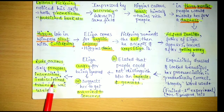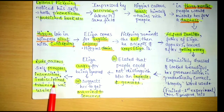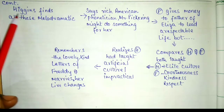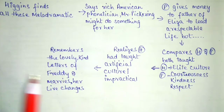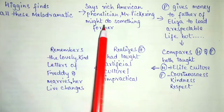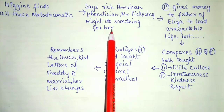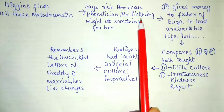Higgins was undisciplined — the person who instilled discipline in Eliza could not control himself. He lost his temper and misbehaved with Eliza during training, so the training was ultimately useless because he could not change himself. Eliza tells him: 'You have made a lady of me — I'm not fit to sell anything else.' Higgins, being insensitive, found all this melodramatic and said she could take help from rich American phonetician Mr. Pickering.